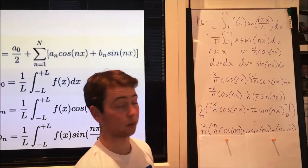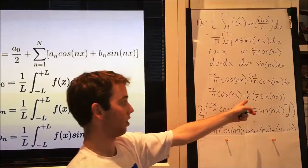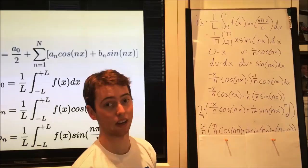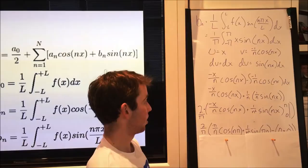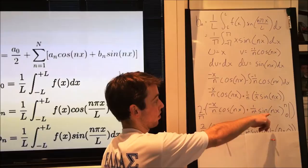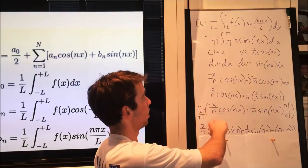From here, we took the integral of negative 1 over n cosine of nx. This brought us to this point in the equation where we had negative x over n cosine of nx plus 1 over n squared sine of nx. Since this function is even, we knew that the integral of this from negative π to π is equal to the integral of it from zero to π times 2.